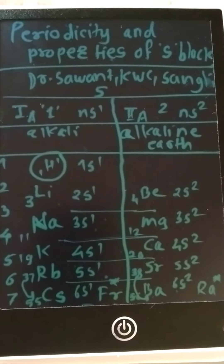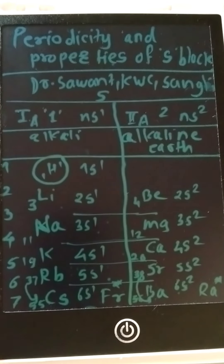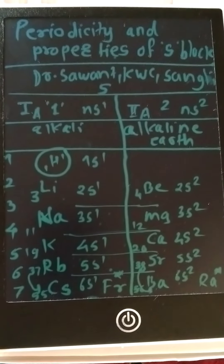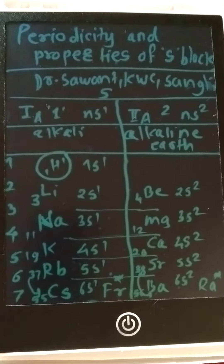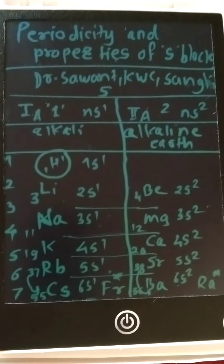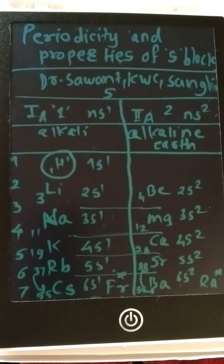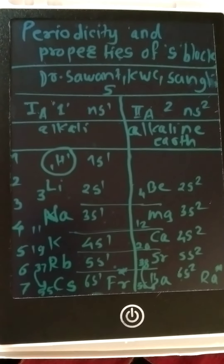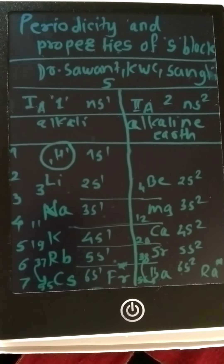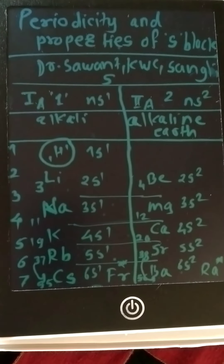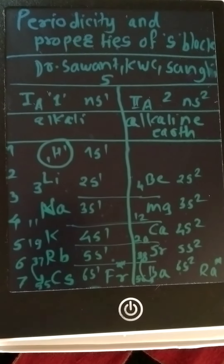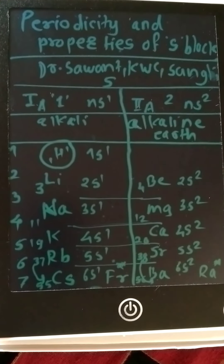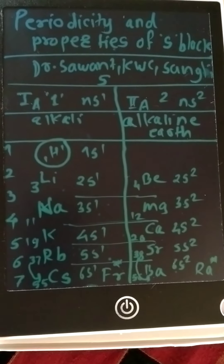S block elements are reactive and reducing metals, so their periodicity and properties are very important. By studying these, we can predict that these metals are used as catalysts in various reactions, as solvent intermediates in synthesis, and in devices like solar cells where potassium is used. These metals are also present in biological fluids, cells of animals and plants — for example, sodium, calcium, and magnesium.